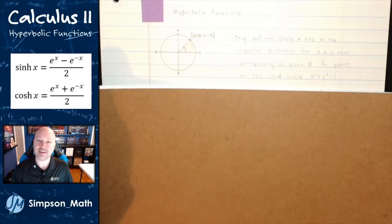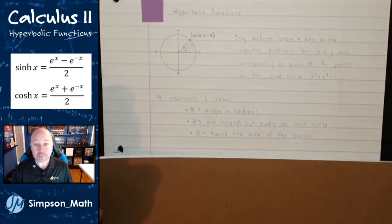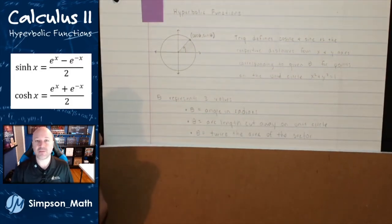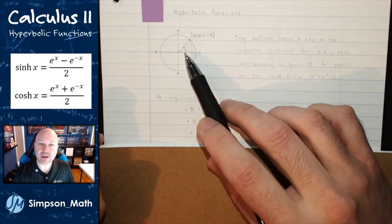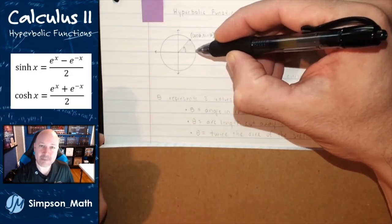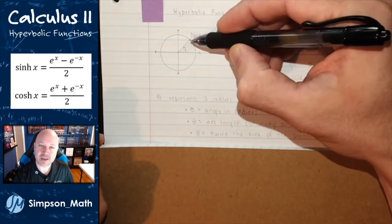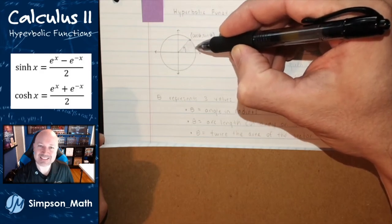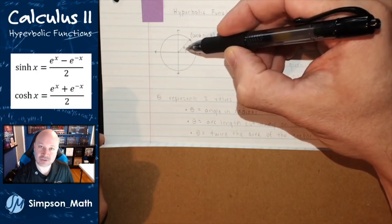Theta in trig world has many definitions. One, theta just represents that angle in radian measure. So in a trig course you step away from degrees and start to measure angles in radians. That central angle theta also represents the arc cut away by that ray. So if this ray cuts through a point and continues on, we have this little arc between the x-axis and that point — that arc length equals the measure of that central angle theta.